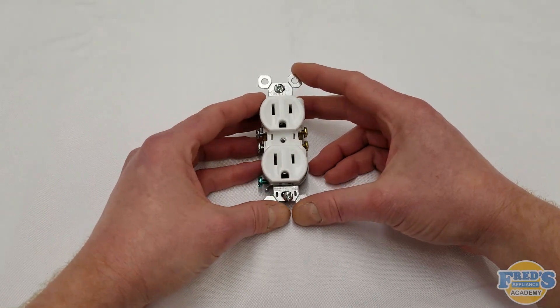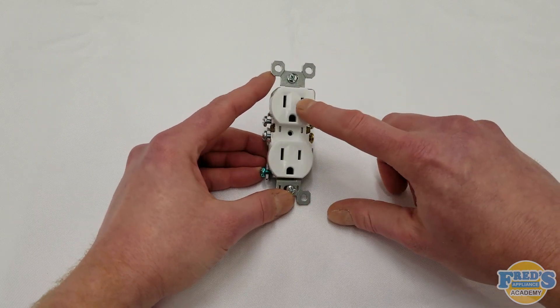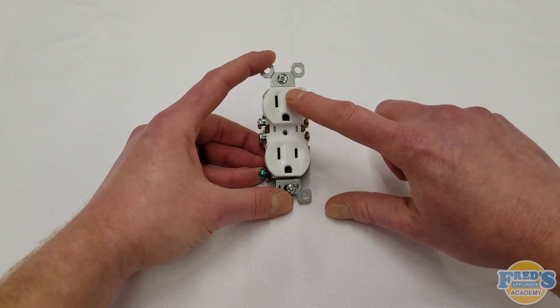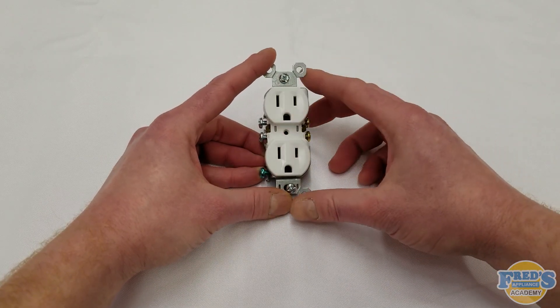Here we have a standard 120 volt outlet and this is going to be rated for 15 amps. This inlet here is going to be your hot, over here will be your neutral, and the half moon shape down below will be your ground.